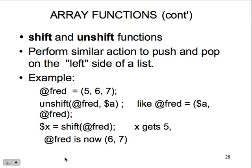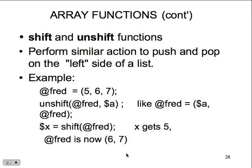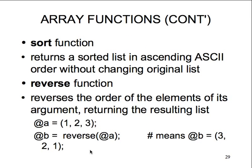Shift and unshift perform similar actions to pop and push but on the left side of the list. '@Fred = (5, 6, 7)' - shift Fred assigns the value 5, and Fred becomes (6, 7). So instead of popping and pulling from the right, you're shifting off the left side, treating it more like a queue. This is something C programmers would love to have - instead of using a for loop to move everything around, you just use shift and unshift.